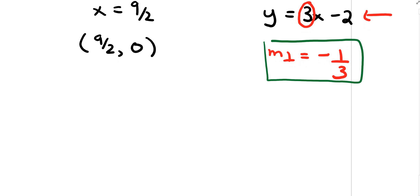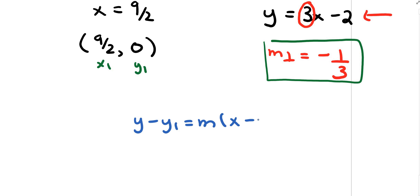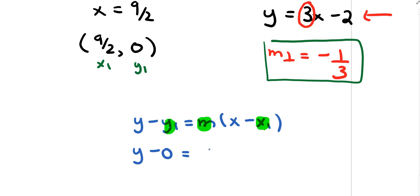Now I have my point and my slope. Labeling x1 as 9 over 2 and y1 as 0, I use the point-slope equation of a line. Filling in the m value, x1, and y1: y minus 0 equals negative 1 third times the quantity x minus 9 over 2.